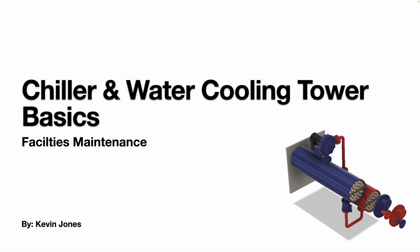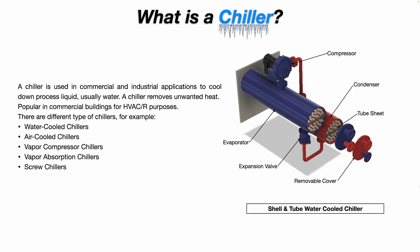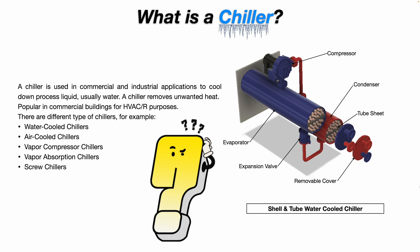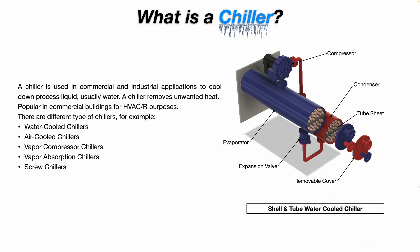Today we're talking about chillers and water cooling tower basics. A chiller is a piece of equipment used in commercial and industrial applications to cool down processed liquid, usually water. A chiller removes unwanted heat. They're popular in commercial buildings for HVACR purposes. There are different types of chillers — for example, water cooled, air cooled, vapor compressor, vapor absorption, and screw chillers.